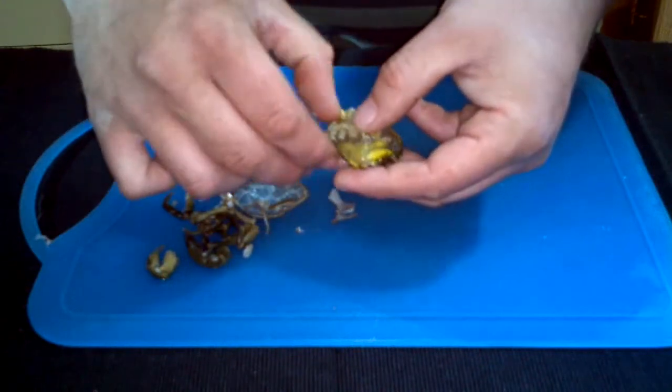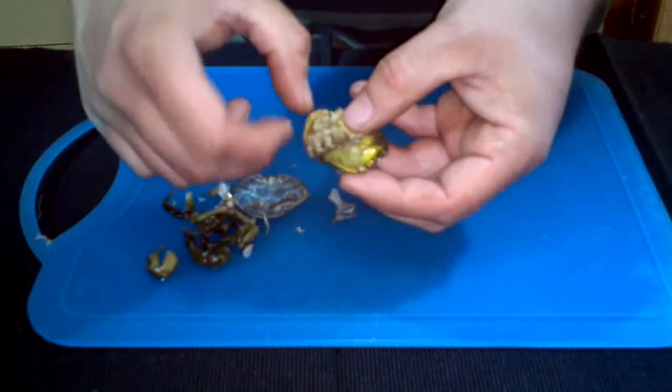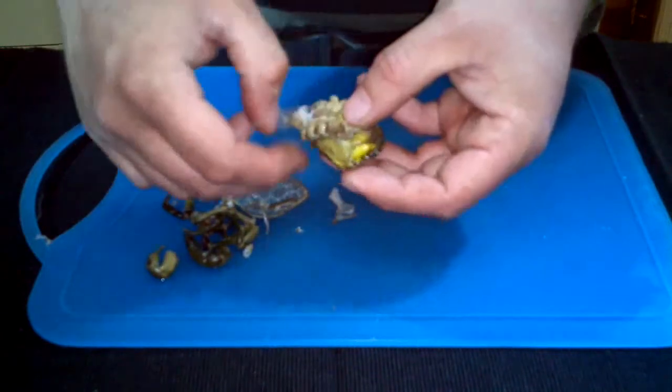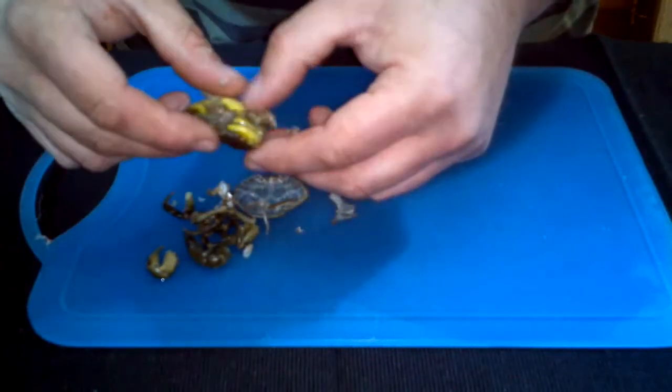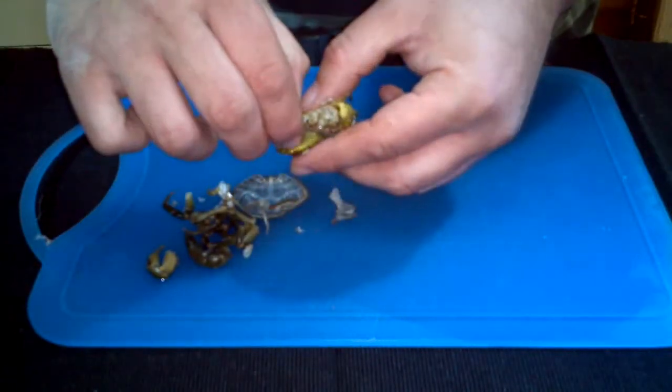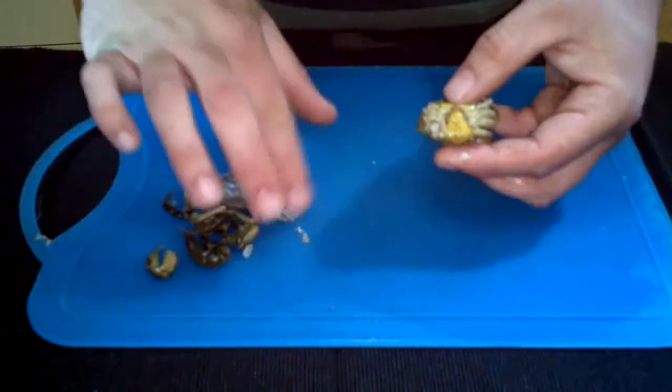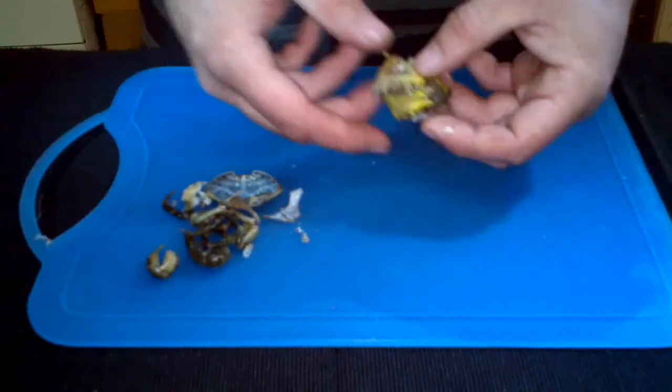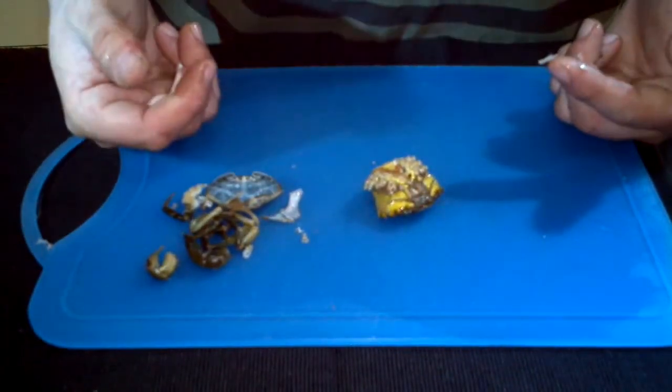Get as much of the shell off as you can. A lot of people say you should remove the lungs and all the rest of it. I've never really bothered. The way I see it, if a fish is going to eat that in the wild, it's going to eat the lungs as well.